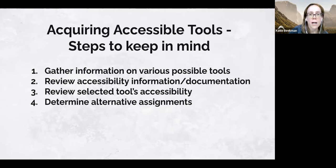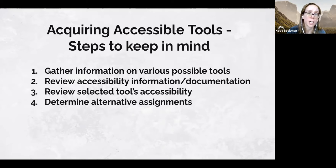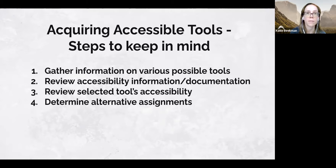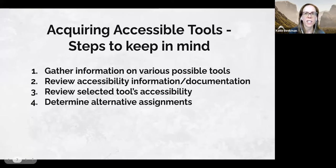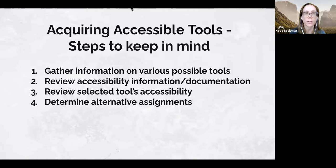Step two: review accessibility information and documentation. Once you have a specific product in mind, ask the vendor for their accessibility documentation and how they've incorporated accessibility into their product. If a vendor doesn't have any documentation or doesn't even know what you're talking about, that's a red flag that their product will probably have significant issues, and an alternative option should be planned for.